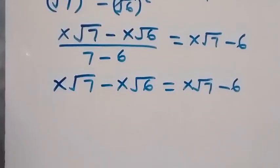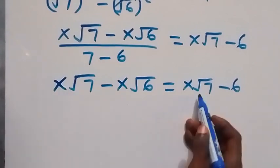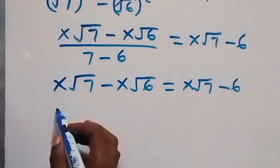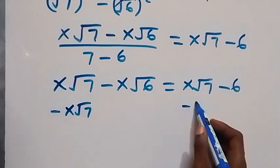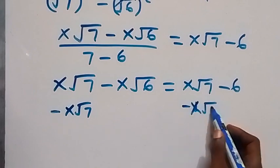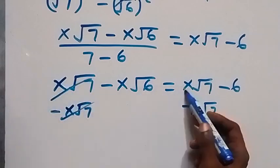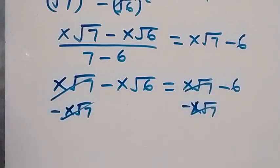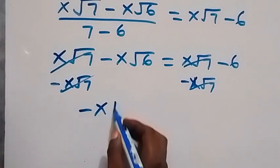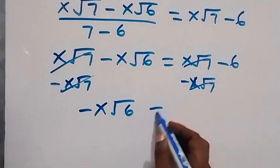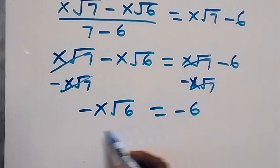Now from here, we have x root 7 here, so subtracting x root 7 from both sides. When we subtract x root 7 from both sides, this cancels out and this cancels out, so we are left with minus x root 6 equals to minus 6.